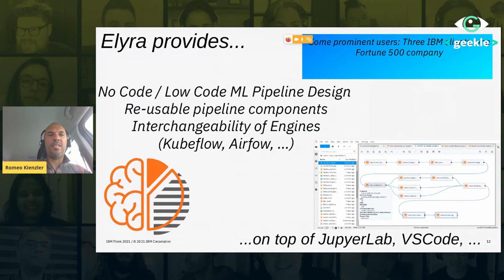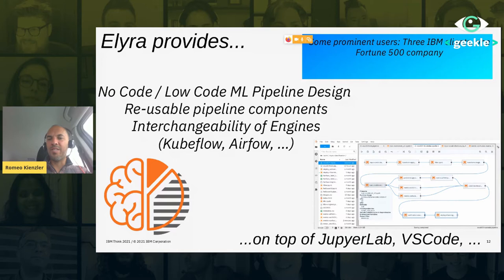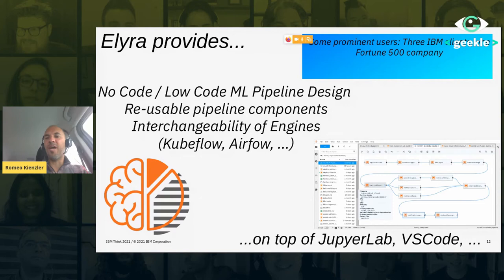Let's have a look at Elyra. Elyra is another open source tool developed by my team. It's an extension to JupyterLab at the moment, but we're also currently working on supporting VS Code. It has a couple of extensions — for Git and to get a diff between two notebooks. But the most important feature is the pipeline editor: it allows no-code, low-code ML pipeline design by just dragging and dropping components from the left-hand side to the right-hand side. Those components include notebooks, shell scripts, and Python scripts. We can push those pipelines to local execution, Kubeflow, or Airflow.